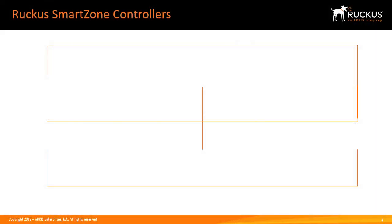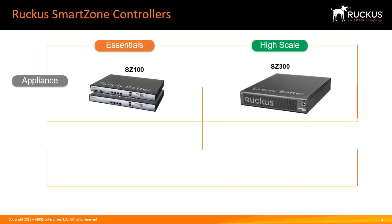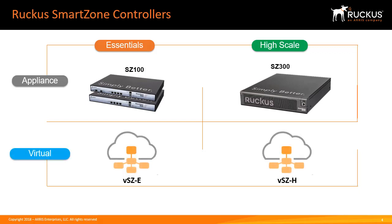Ruckus SmartZone controllers are wireless LAN controllers that run the Ruckus SmartZone operating system, which comes in two versions: the SmartZone Essentials and the SmartZone High Scale. SmartZone controllers are available in two deployment options, either as a physical appliance or as a virtual machine. The options include the SmartZone 100, which runs the SmartZone Essentials option, and the SmartZone 300 Standard, which runs the High Scale version of SmartZone.